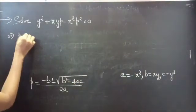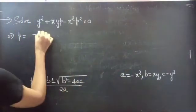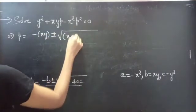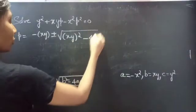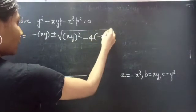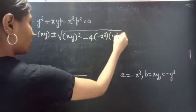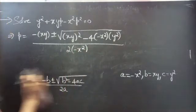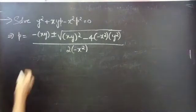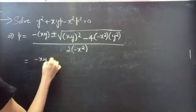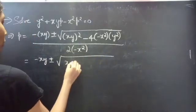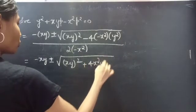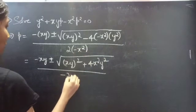Then p equals minus b, where b is xy, so minus xy, plus or minus square root of b squared — that is (xy) squared — minus 4ac, divided by 2a. This equals minus xy plus or minus square root of (xy) squared minus 4·(minus x squared)·y squared, divided by minus 2x squared.